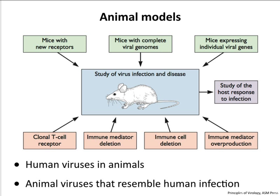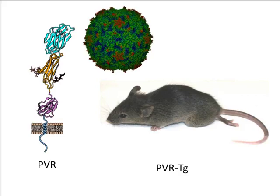Let me tell you an example of an animal model we made in our laboratory — a mouse model for poliovirus infection. Poliovirus is an exclusively human virus; it infects no other animals in the wild. If you infect a mouse with poliovirus by any route, even 10 to the 9th or 10th PFU, the mouse will run around happily and never be ill because the virus can't get into mouse cells.